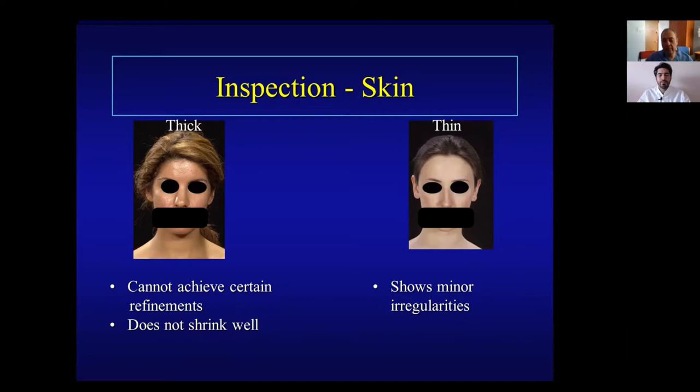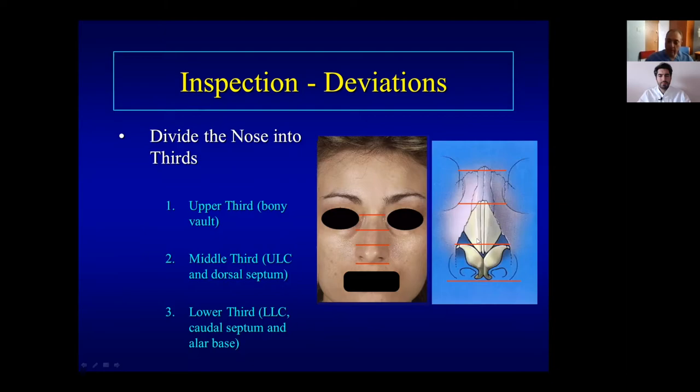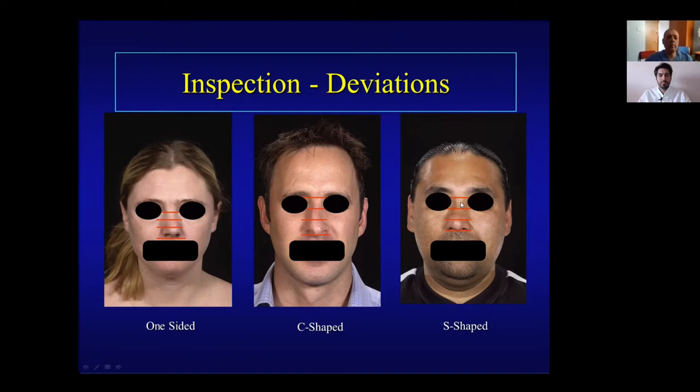Deviation of the nose is very common. It's useful to divide the nose into three thirds: upper third is bone, middle third is cartilage (upper lateral and septum), and lower third is the lower lateral cartilage and rest of septum. When assessing deviation, note direction in each third — right or left — as this helps plan the operation. For example: one patient shows left, left, left deviation; another shows right, right, central. This guides your surgical planning.